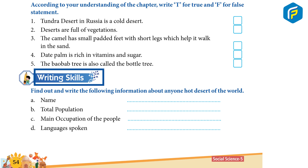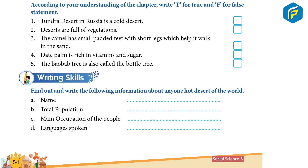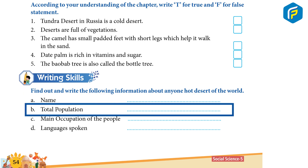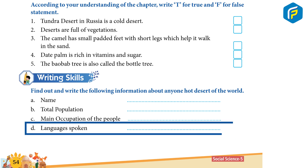Writing Skills: Find out and write the following information about any one hot desert of the world: B. Total population. C. Main occupation of the people. D. The language spoken. Thank you.